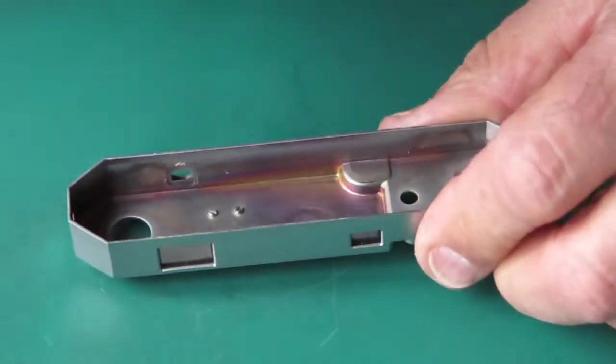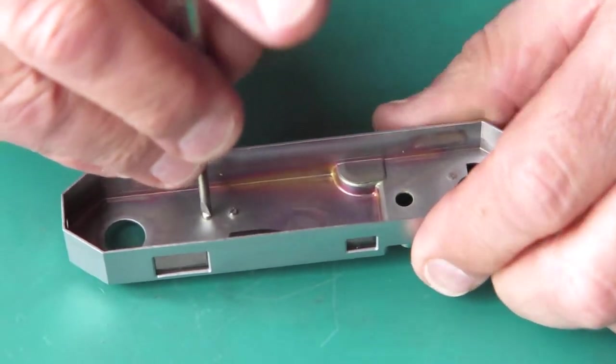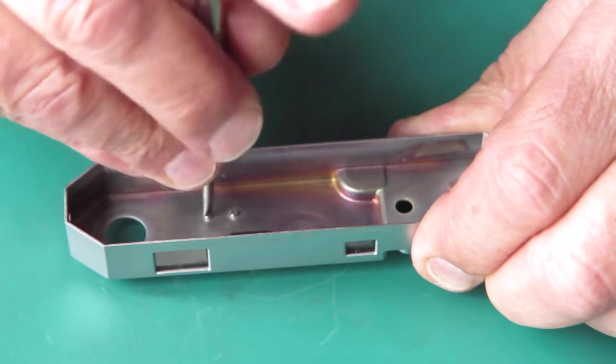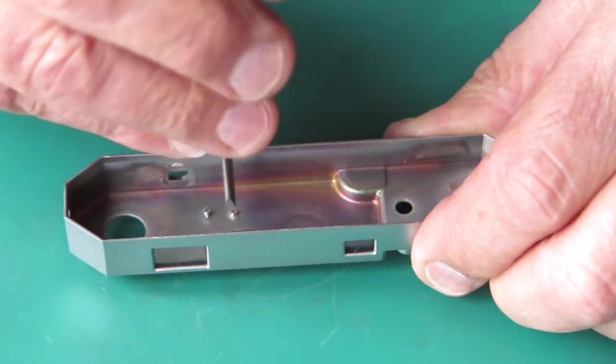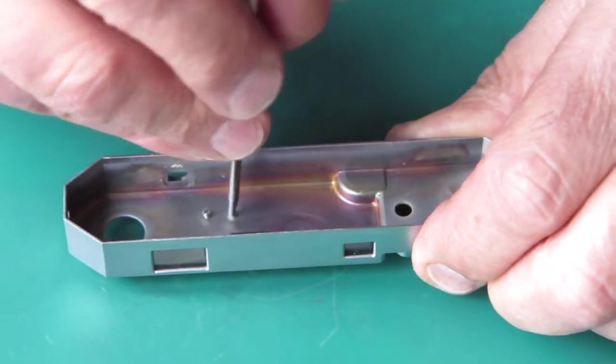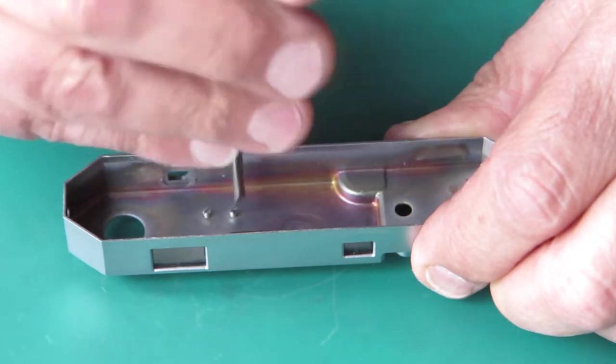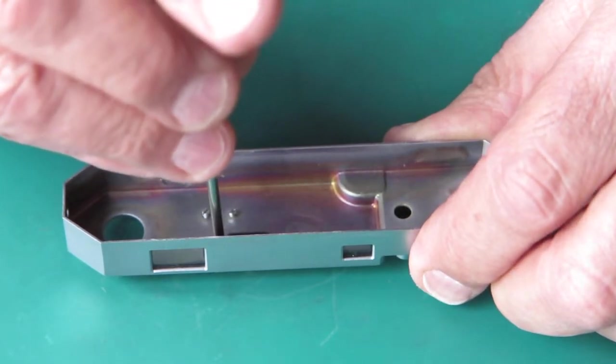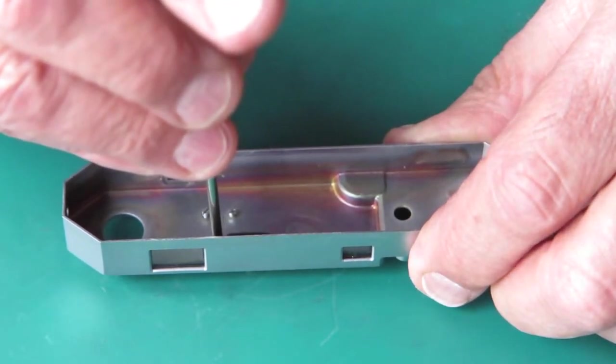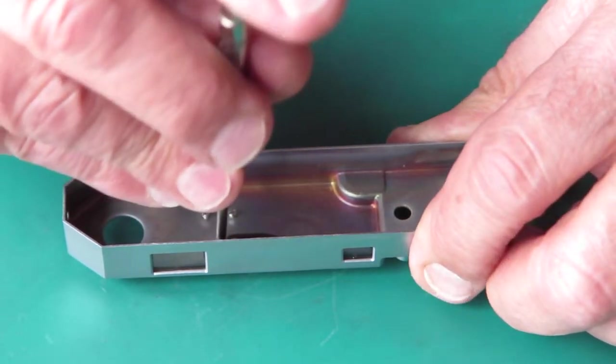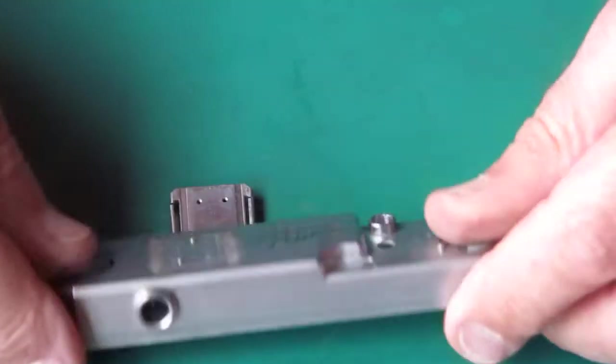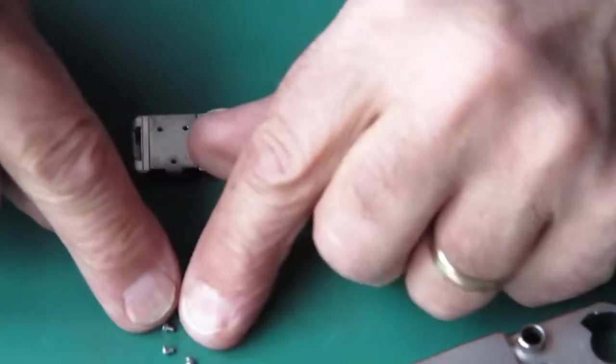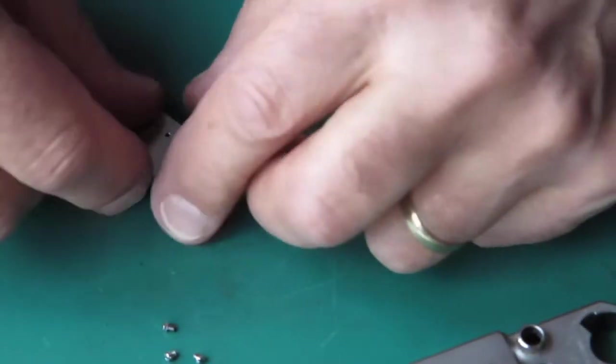So these three screws need to come out because the shoe is somewhat misshapen, probably through having something inappropriate forced into the shoe. And by taking it off, it'll give me a chance to straighten it up. When I put it back on, I will be locking these screws in place with a little bit of lacquer.